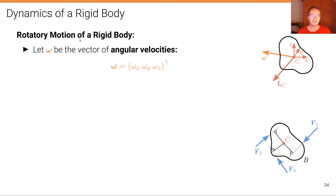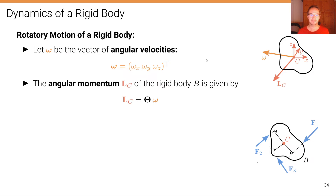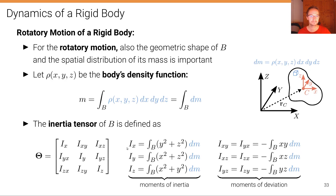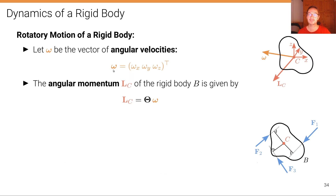Let's consider the rotatory motion of a rigid body. Let omega be the vector of angular velocities, so omega is a vector (omega x, omega y, omega z), where the rigid body rotates around that vector and the rotational velocity equals the magnitude of that vector. The angular momentum Lc of the rigid body is given by the product of the inertia tensor times the angular velocity vector omega — a three-by-three matrix multiplied by a three-vector.